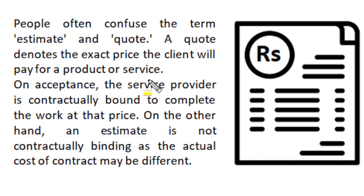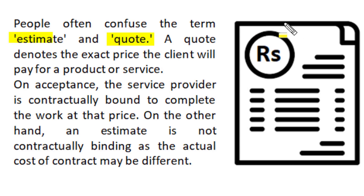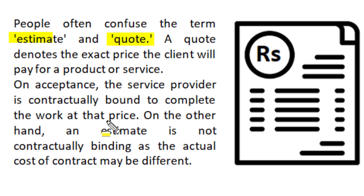There is a difference between estimation and quotation. A quoted price denotes the exact price that a client has to pay for any product or service, whereas estimation gives an idea about that cost. Most often, quotations are prepared only after estimation. If a quotation is accepted, then between supplier and beneficiary a contract is usually formed, and the service provider is contractually bound to complete the work at that price.